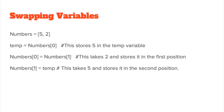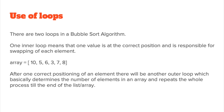Now let's look at the importance of loops in this process, because often you don't just get two values — you get hundreds, thousands, or millions. There are two loops in a bubble sort algorithm. The inner loop is responsible for swapping each element. The outer loop determines the number of elements in the array and needs to run for the length of the array. The inner loop repeats the swapping process until the end of the list.